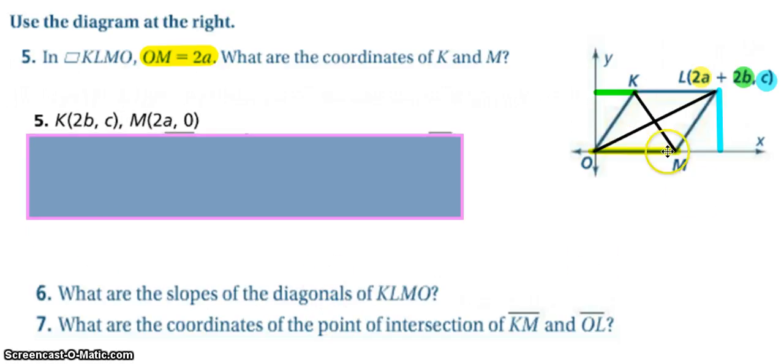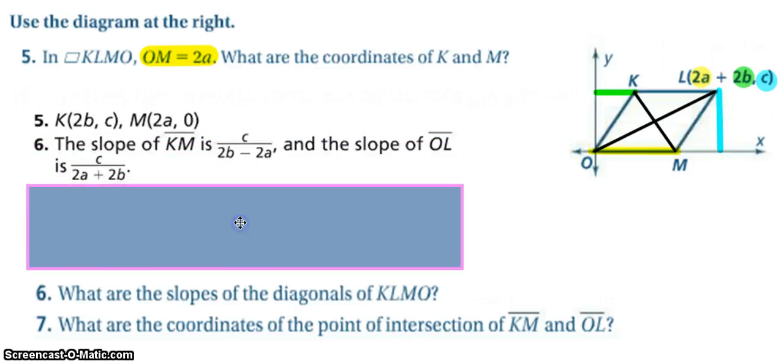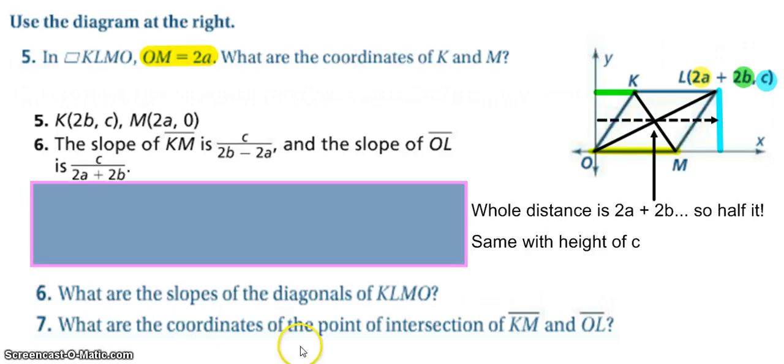So to find the slopes of the diagonals of KLMN, I've got my lines here now shown, so all I need to do is find the rise over run for K to M and then O to L. So for K to M, my rise is C, really more so a negative C, and then my run is 2B minus 2A. Slope of OL you can see there.